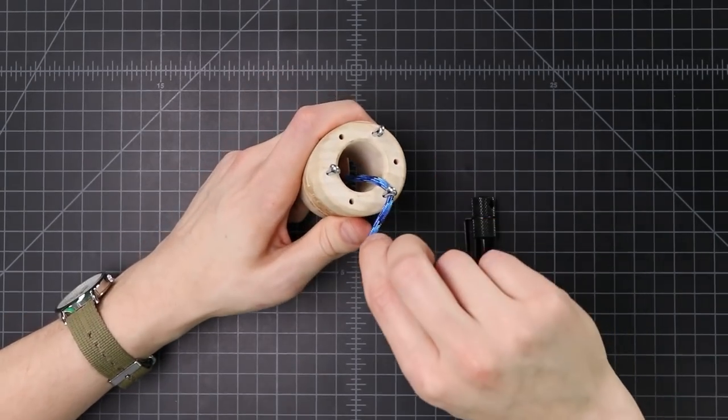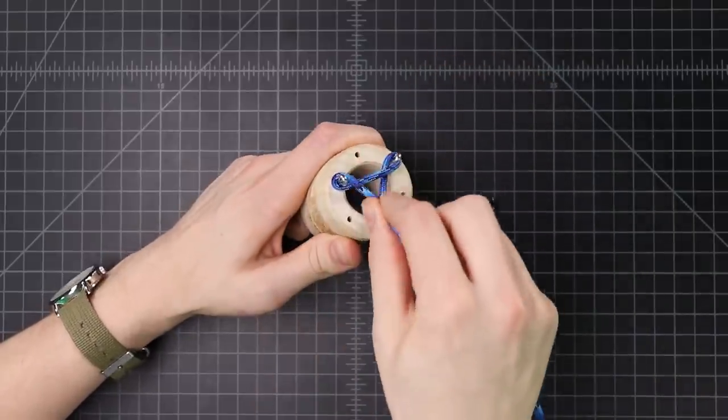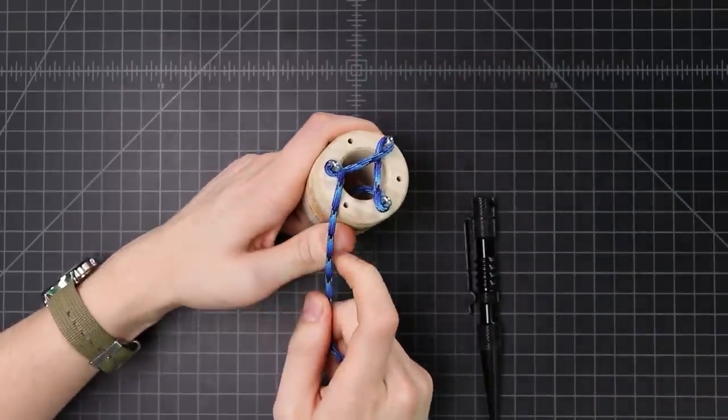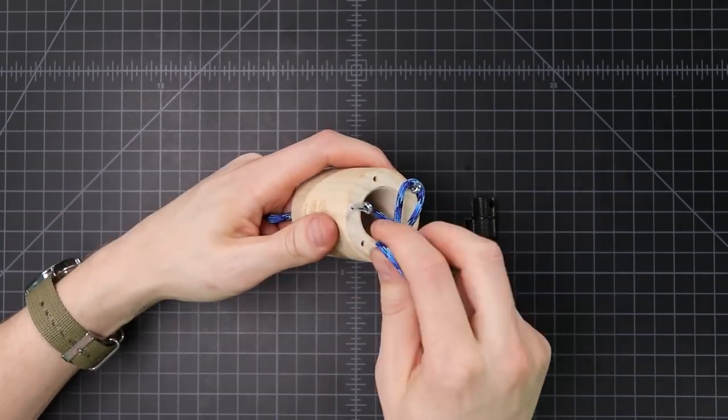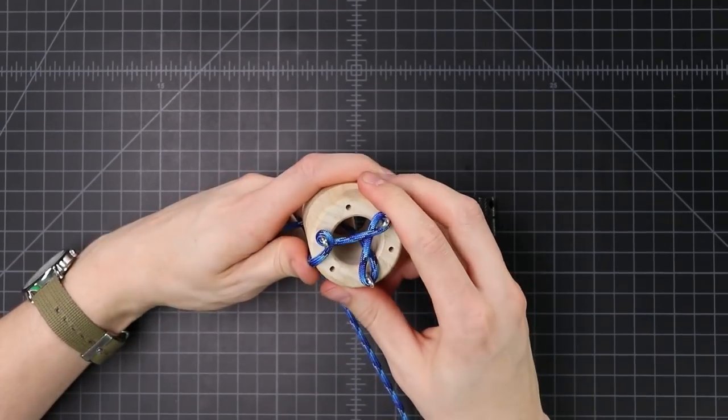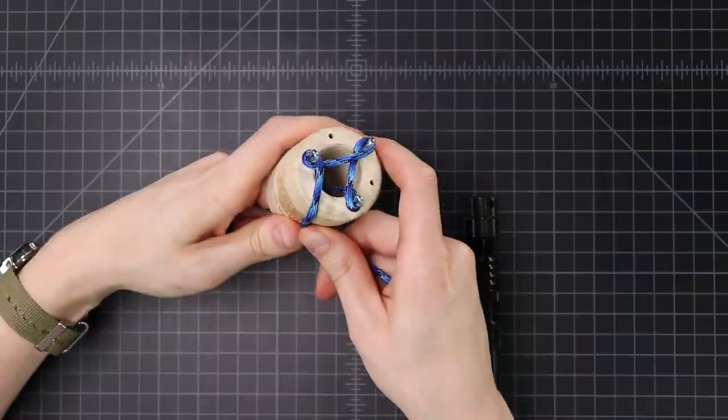So we're gonna be wrapping it around clockwise, onto the next peg, clockwise, onto the next peg, clockwise. We want to keep this cord taut so that we don't lose pressure and it comes off the pegs like that. So that's once around. We're gonna do twice around before we go on to the second step.